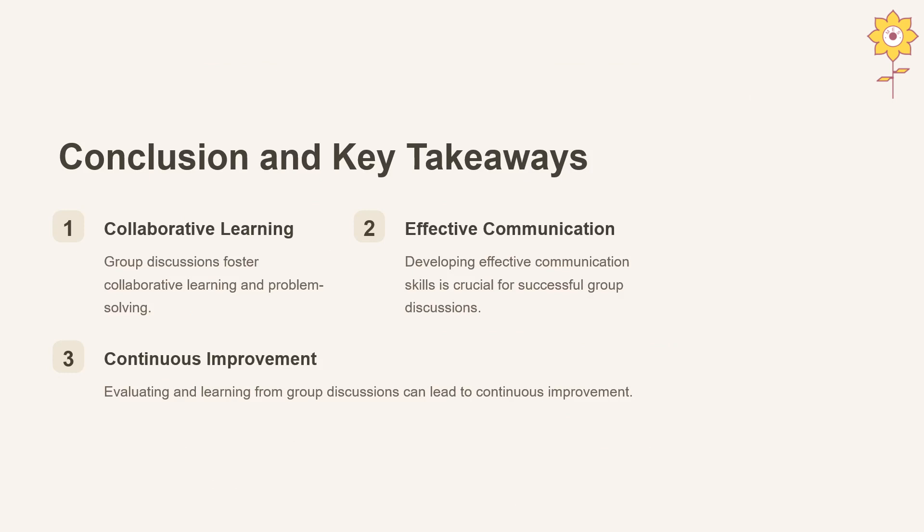Conclusions and key takeaways. Collaborative learning, effective communication, and continuous improvement are what we have covered. In group discussion, collaborative learning means it is not just about your own point of view, but also about the perspectives of all participants. Effective communication is crucial for a successful group discussion, and active listening is a key part of that. Evaluating and learning from group discussions leads to continuous improvement, which is the most important aspect of group discussion. Thank you.